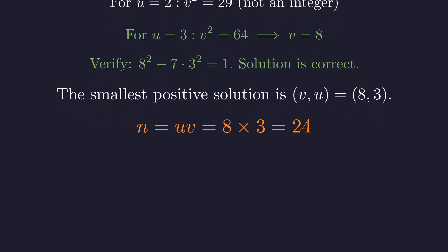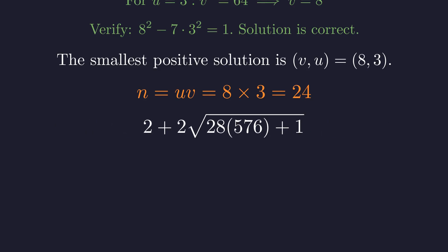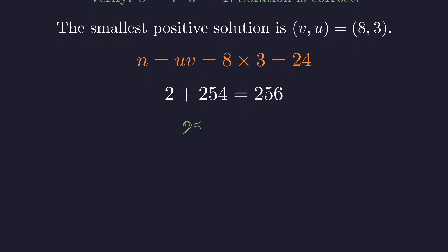From our earlier definition, n is the product of u and v, which is 24. Now we substitute n equals 24 into the original expression. First, we evaluate 24². This is 576. Next, we multiply by 28. The product is 16,128. Adding 1 gives 16,129. As predicted by our proof, this number must be a perfect square. Its square root is 127. The expression becomes 2 plus 2 times 127. This evaluates to 256. And 256 is 16², confirming our result.